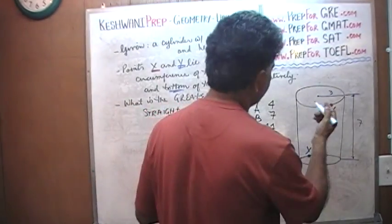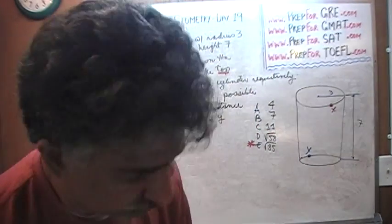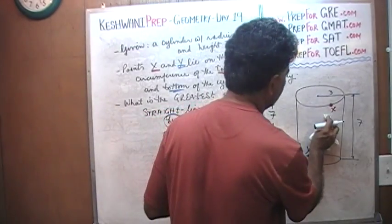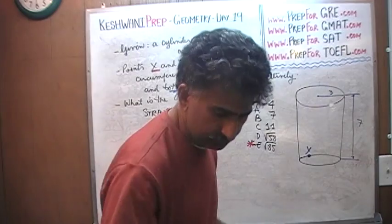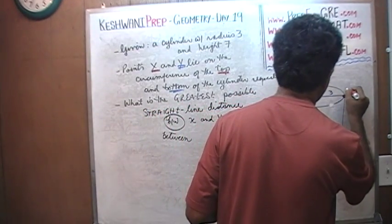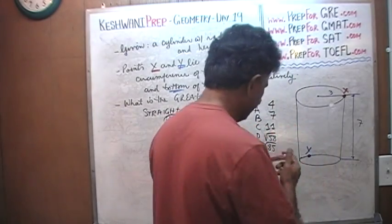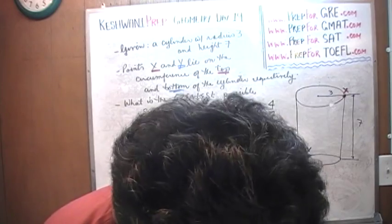We know the radius is 3. How can we put X and Y so the distance from X to Y is as large as possible? We're going to have to move this X and Y. Let's put the X over here and let's move the Y to the other corner.